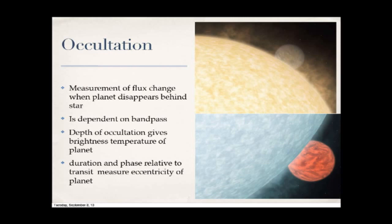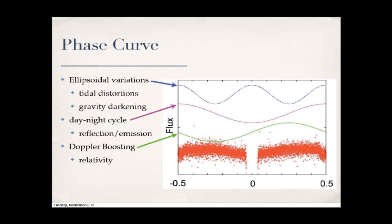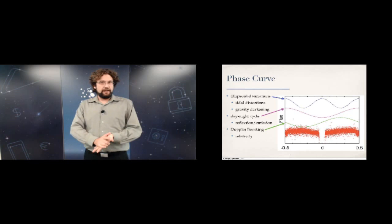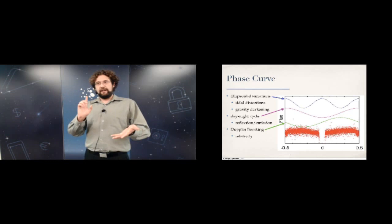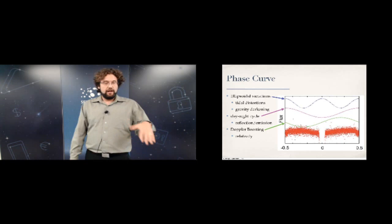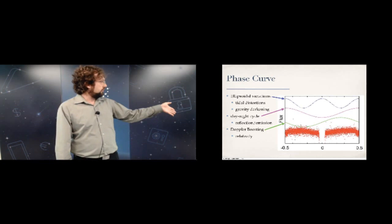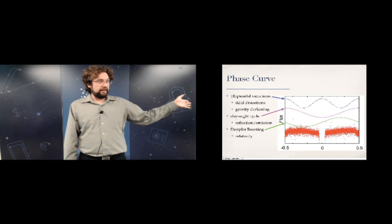For the close-in planets we're measuring today, you expect circular orbits. The phase curve — folded at the orbital period — is mostly dominated by the day-night cycle. As the planet goes around, the star becomes more illuminated from our perspective, so flux continuously increases toward the observer. At phase zero is the transit; the pink curve shows the phase plot for reflectivity, where flux increases as the planet becomes more illuminated.